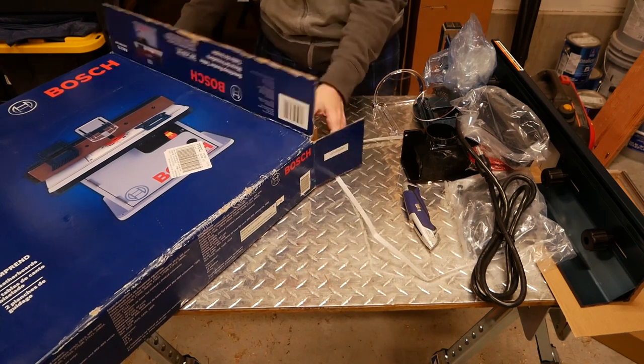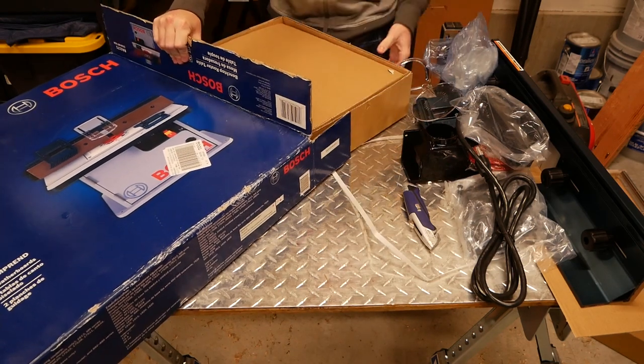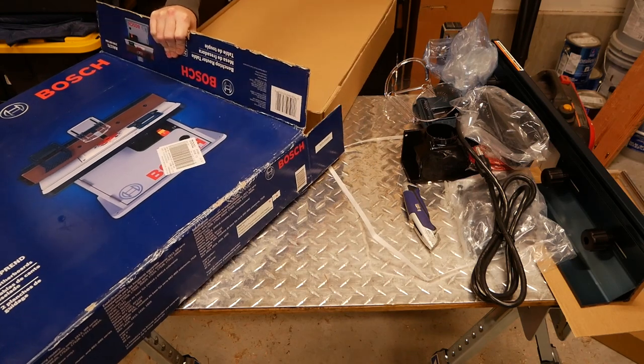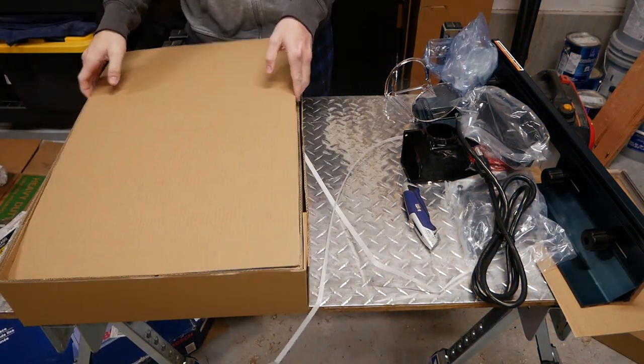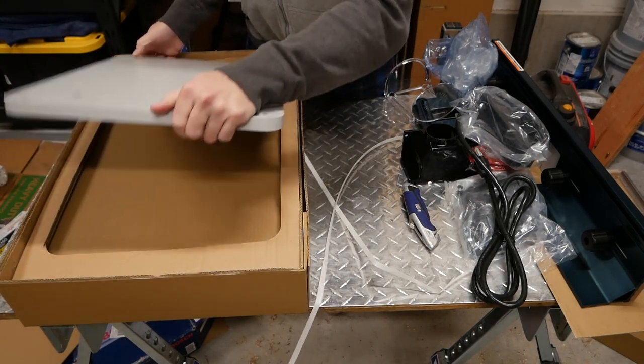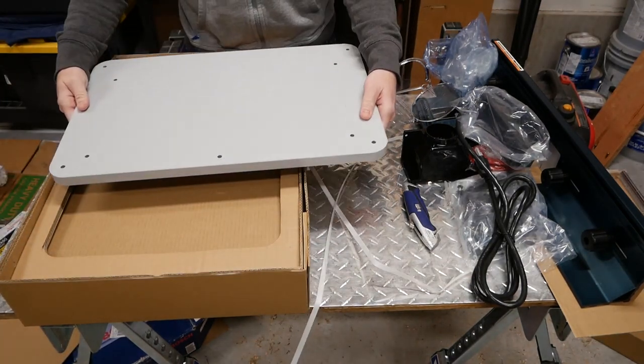Setting all that aside, we're now getting to the bones of the Bokia baby. Out first is the table's bottom plate. As would be expected, we see all holes are pre-drilled and countersunk.